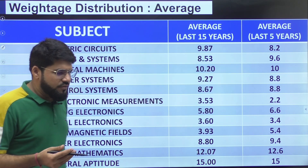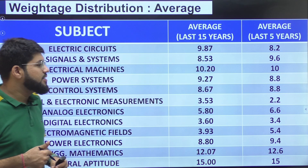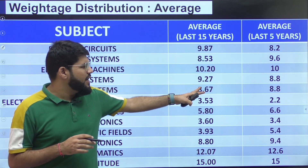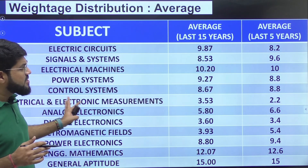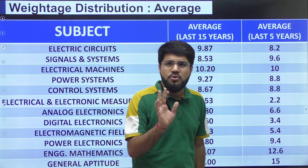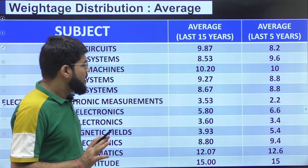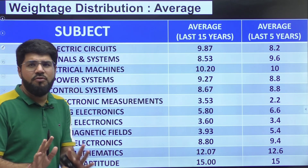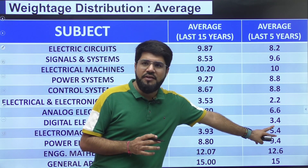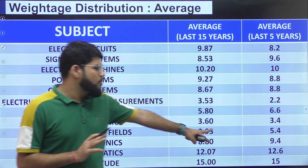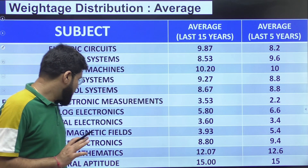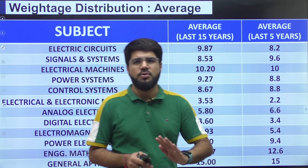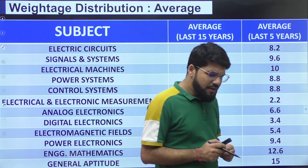Signals weightage has increased because many higher education electrical engineering courses also demand signal and signal processing knowledge. Machines: around 10 marks whether you look at 5 or 15 years. Power systems: around 9 marks. Control systems: around 8.5 to 9 marks. Measurements: over 15 years around 3.5, but last 5 years it's around 2 marks. Analog and digital combined: around 10 marks total — mostly 5 to 6 analog and around 4 marks digital. Electromagnetics: around 5 to 6 marks. Power electronics: around 9 to 10 marks. Maths is fixed at 13 marks.